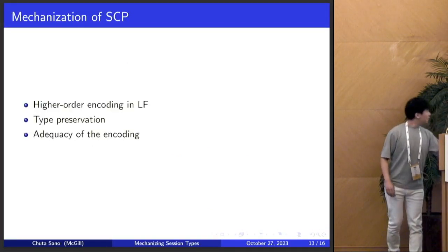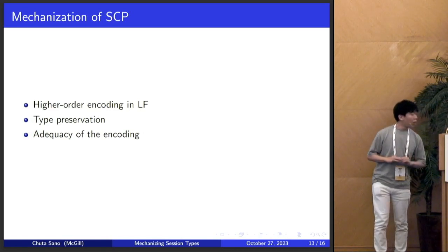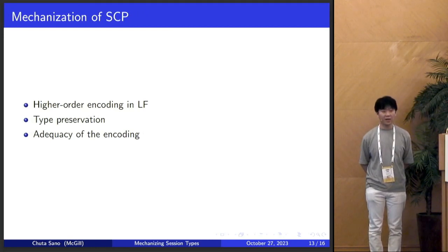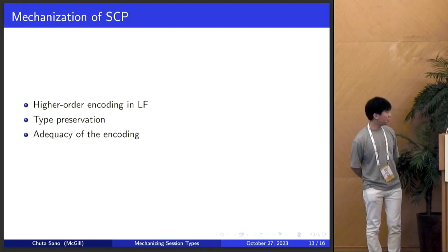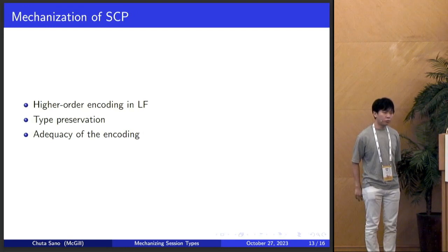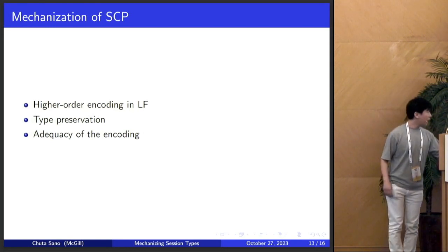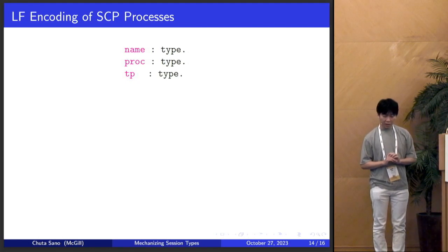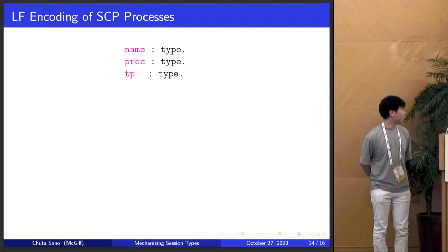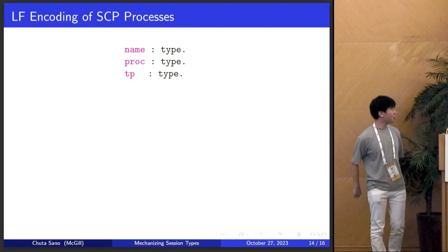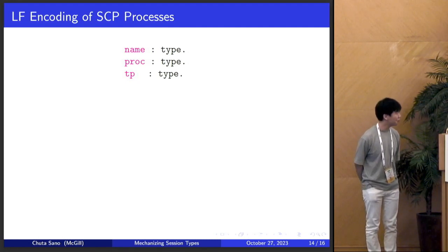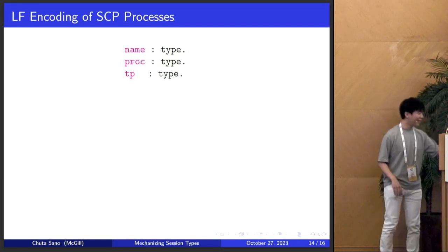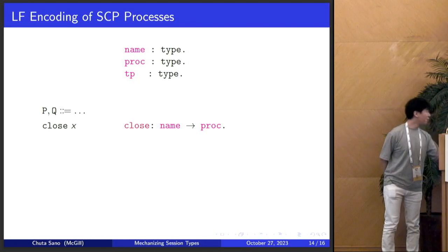There are essentially three components of the mechanization: first, we encode the syntax in logical framework LF; second, we mechanize the type preservation proof in Beluga; and third, on paper, we prove the adequacy of our encoding in the sense of LF. I mostly want to highlight the higher-order encoding part. I'll be depending on types: 'name' for channel names, 'proc' for processes, and 'TP' for session types. I'll spare you the details of encoding the session types as they're fairly standard, but here you'll see higher-order abstract syntax at play.